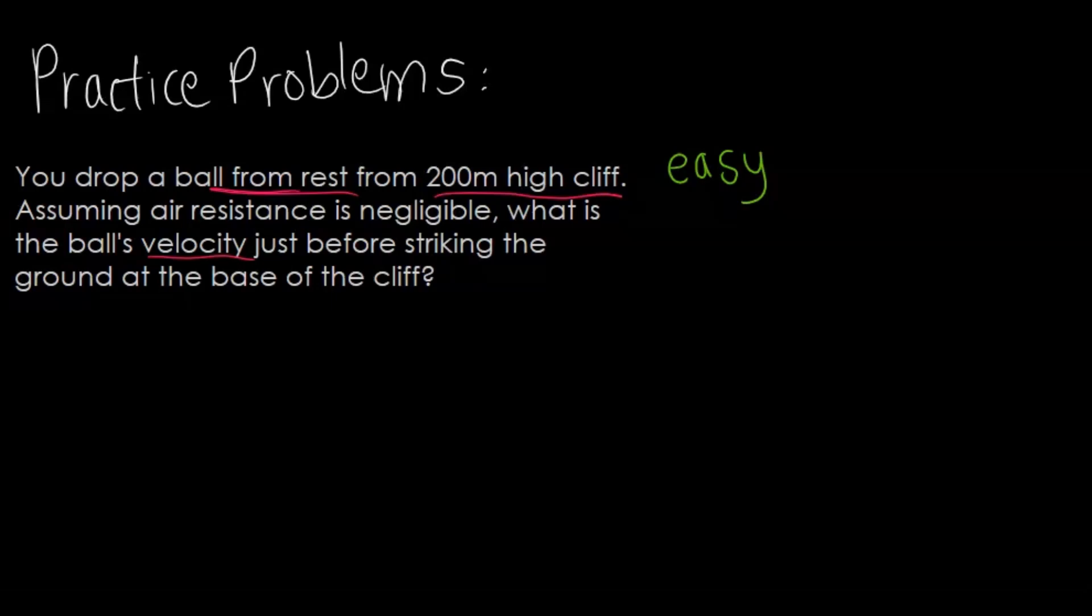The first thing that I know is that the y displacement is going to be negative 200 meters. That's because we identify the top of the cliff, the top of the 200 meters, as the zero point line. So if you drop something below that 200 meters, that's going to be the negative.